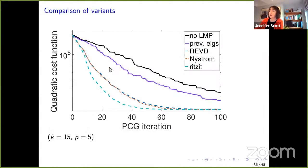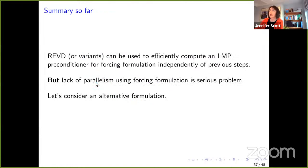Comparing the different variants — no preconditioning, preconditioning with previous eigenvectors, and the three variants (basic randomized, Nyström, and REVD-Ritzit) — the REVD-Ritzit one does seem to give the fastest convergence. This is looking promising: we have a method to compute approximate eigenvectors cheaply and employ them in a limited memory preconditioner that doesn't depend on the previous steps. However, there is a lack of parallelism in this forcing formulation, so we need to look at an alternative formulation.